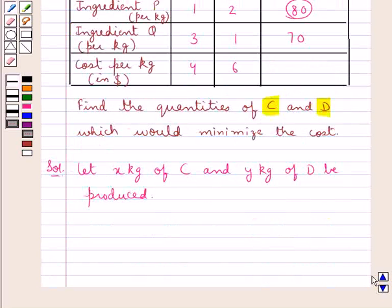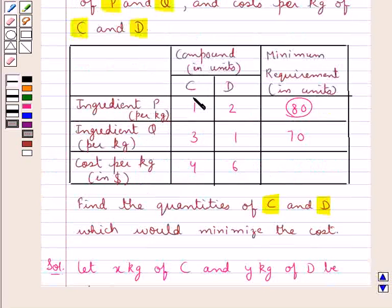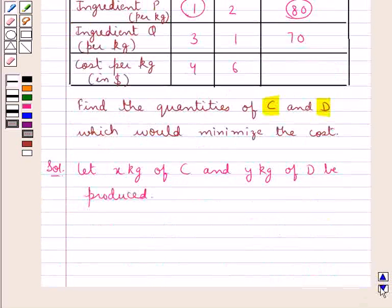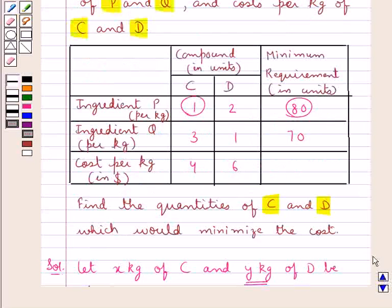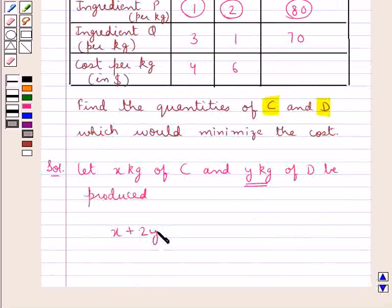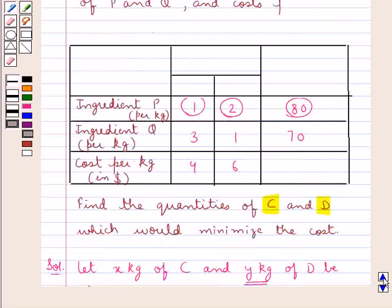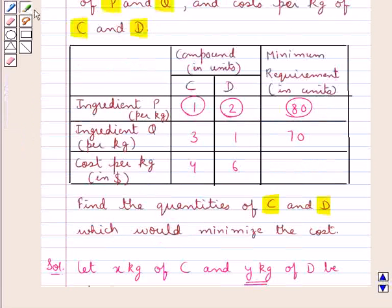If X kg of C is being produced and ingredient P per kg in compound C is 1 unit, we have 1 times X, that is X. Since Y kg of compound D is being produced and ingredient P per kg in compound D is 2 units, we have X plus 2Y as the total ingredient P in both compounds, and this should be greater than or equal to 80, as the minimum requirement of ingredient P is 80.